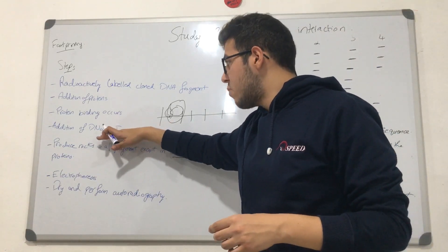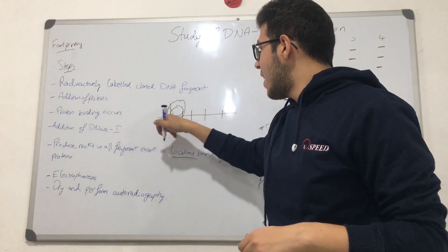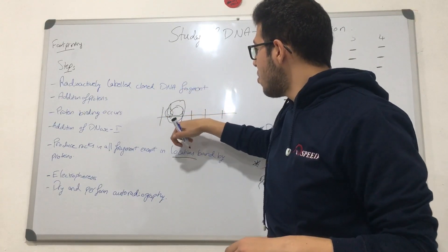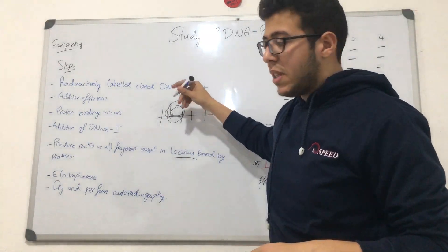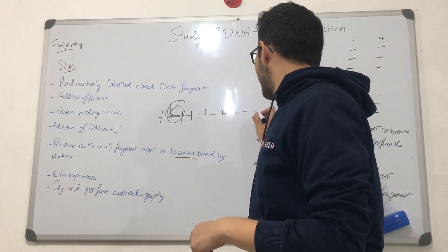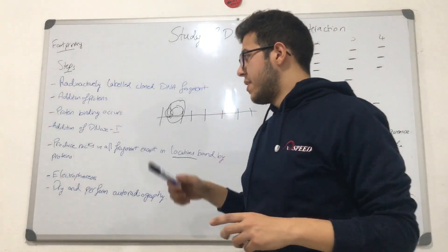And then we're going to be adding DNase. This enzyme is important because it is going to be producing nicks inside this DNA fragment, and it is not going to be performing nicks in regions that have proteins on them. Basically, it is going to be cleaving the entire fragment except locations where there are proteins.